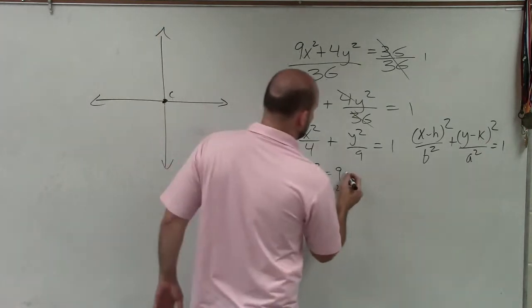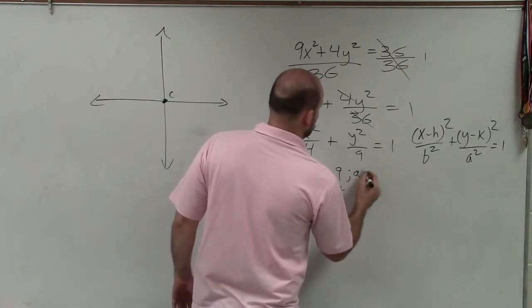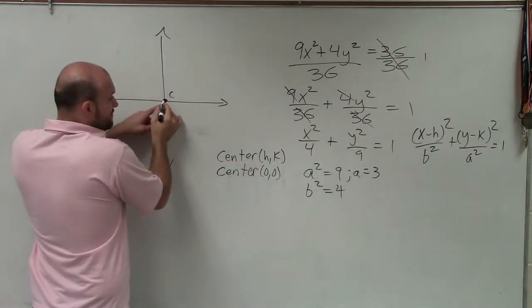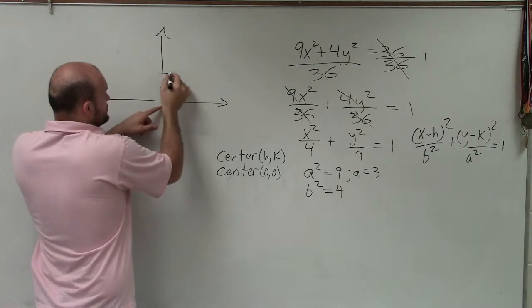Now, if a² equals 9, that means a is equal to 3. So from my center, to find my vertices, I just need to go up 3, 1, 2, 3.